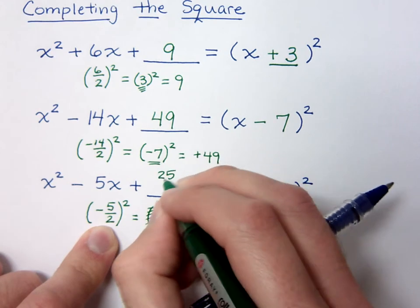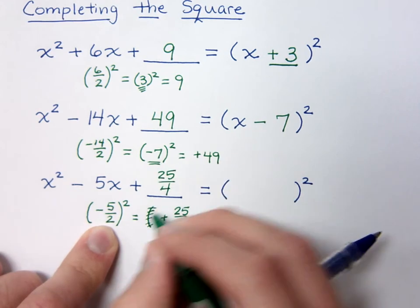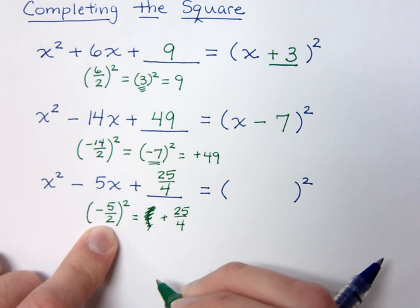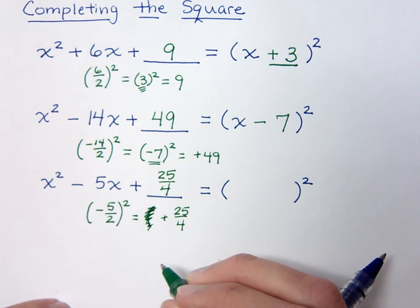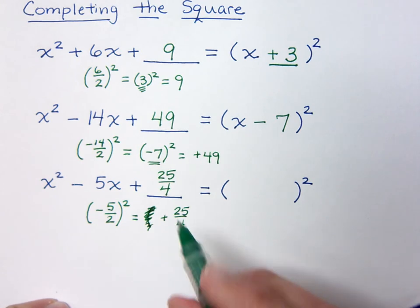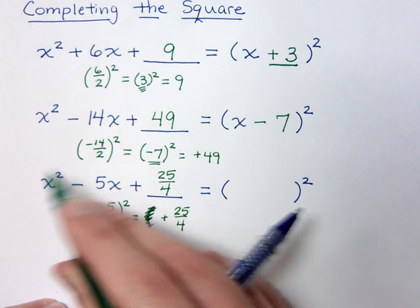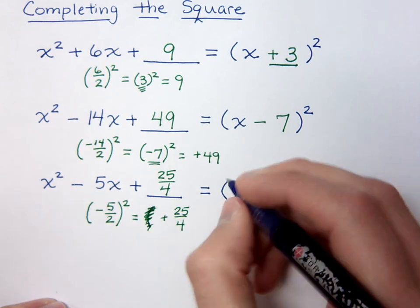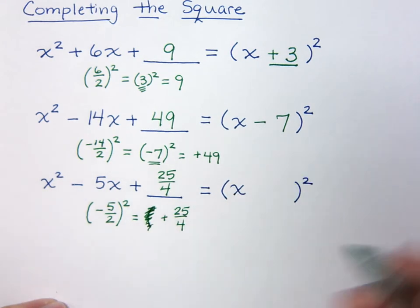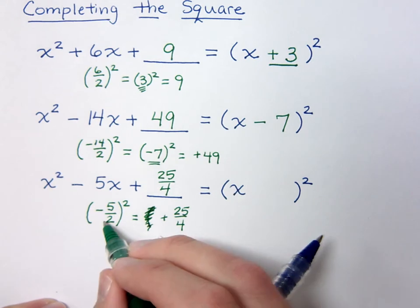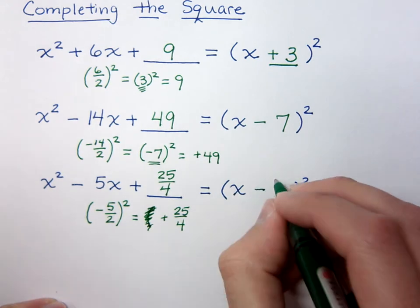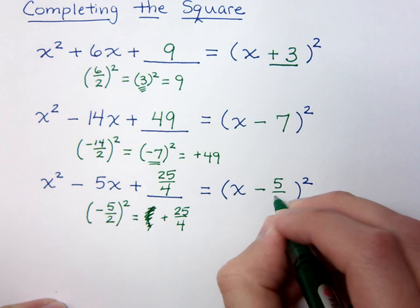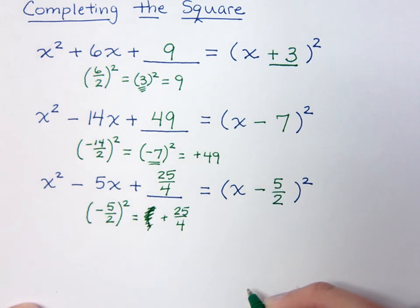So, 25 over 4 is what needs to be added here. I know, I'm not perfect for those of you that are watching the videos. I'm not perfect. So, 25 over 4 will complete this square, and the factored part will be x, and then what was it before you squared it? It was negative 5 halves, so minus 5 halves. And there's your factor form.